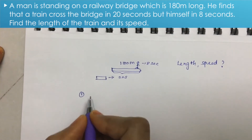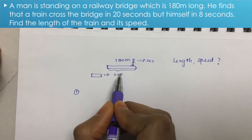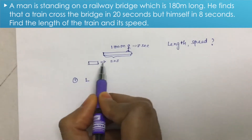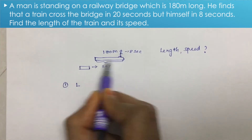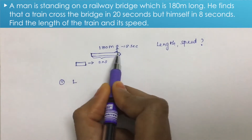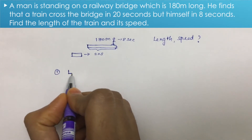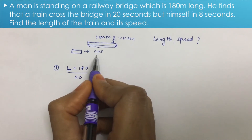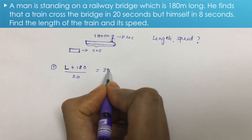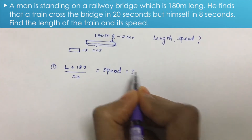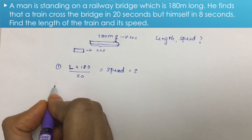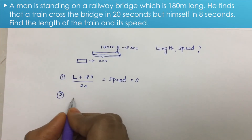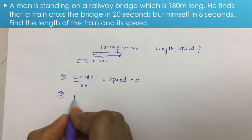Let the length of the train be L and speed be S. In the first scenario, the train crosses the bridge, so the distance traveled is the length of the train plus the bridge length, which equals L plus 180. In the second scenario, the man is a single point, so the distance traveled is just the length of the train, L.